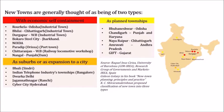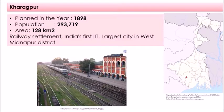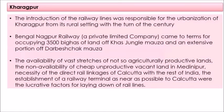Among the pre-independence new towns, Kharagpur was set up as a railway town in 1898. As per the 2011 census, the population of Kharagpur is nearly three lakhs and the area is about 128 square kilometers. The town was set up in the Medinipur district of West Bengal, and the introduction of the railway lines was responsible for the urbanization of Kharagpur from its rural setting to becoming a town.